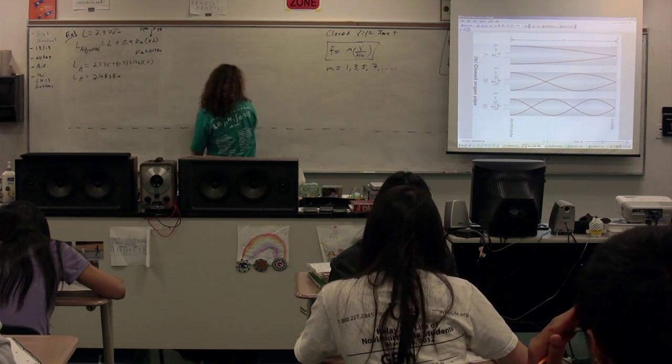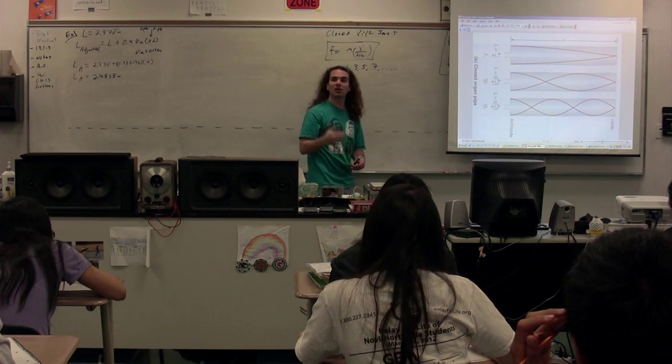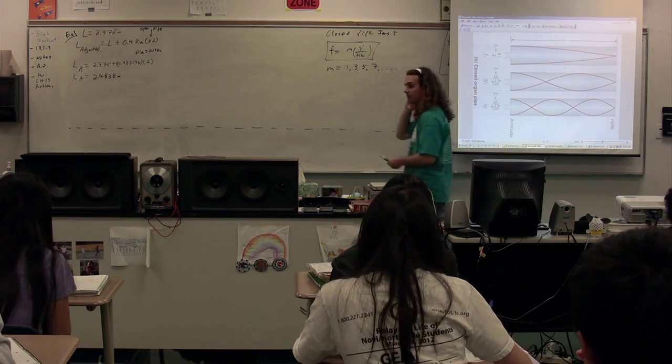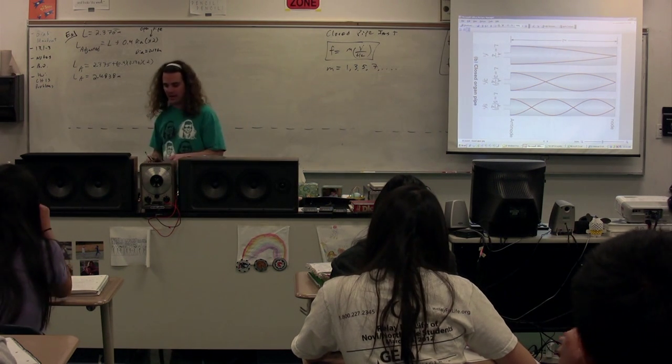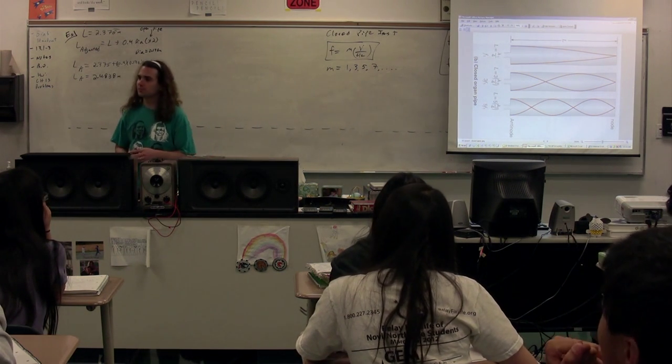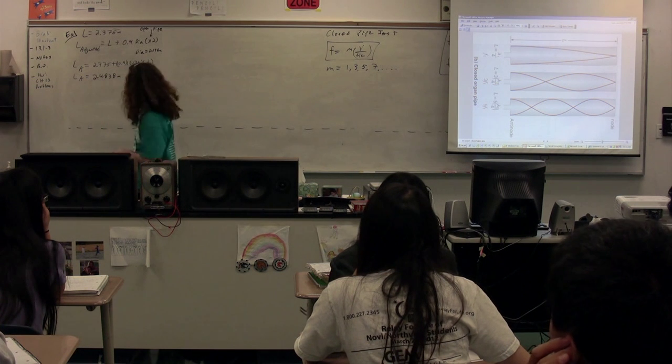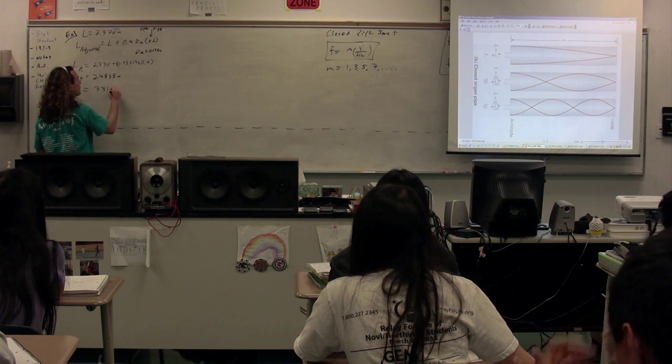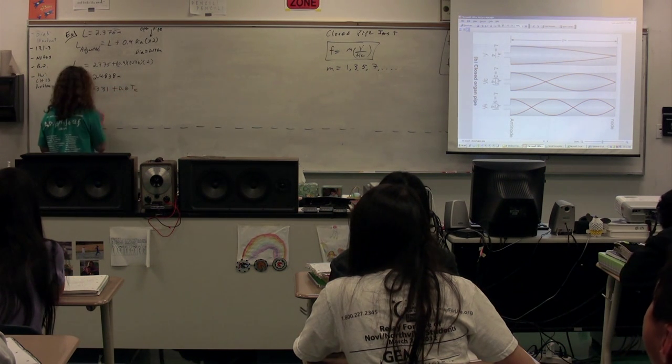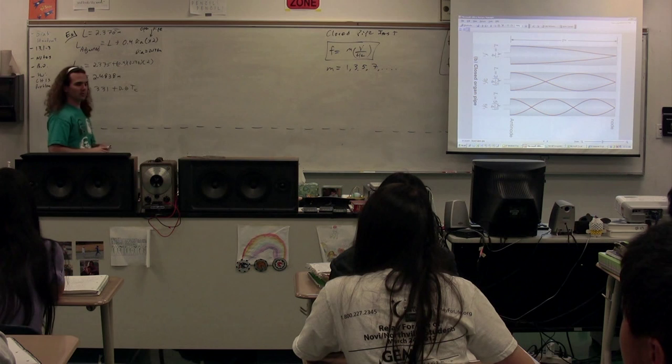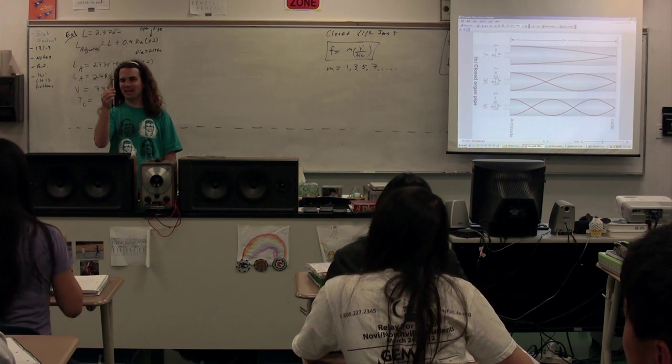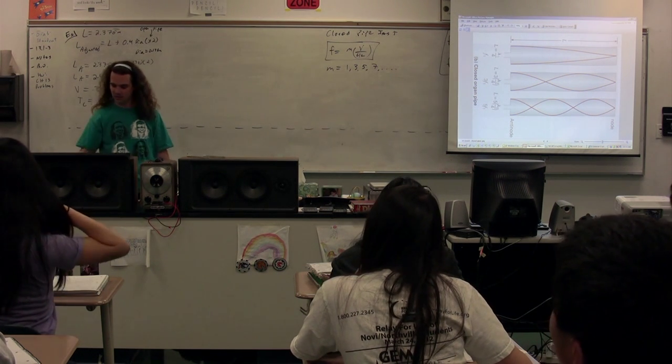We also need the speed of sound in air, because that's the medium through which this sound is traveling, this wave is traveling. So what do we need in order to figure that out? We need the temperature. So it's 331 plus 0.6 times the temperature in degrees Celsius. The temperature in degrees Celsius, don't you worry, I have thermometer. It looks like about 22.8 degrees Celsius.